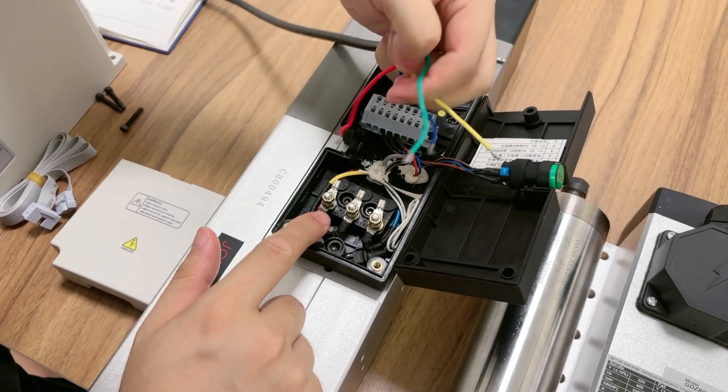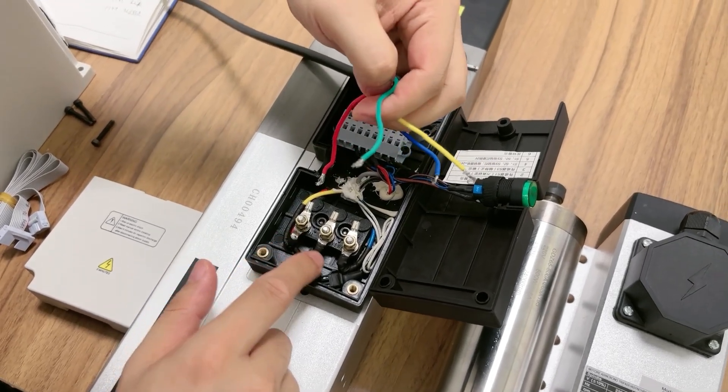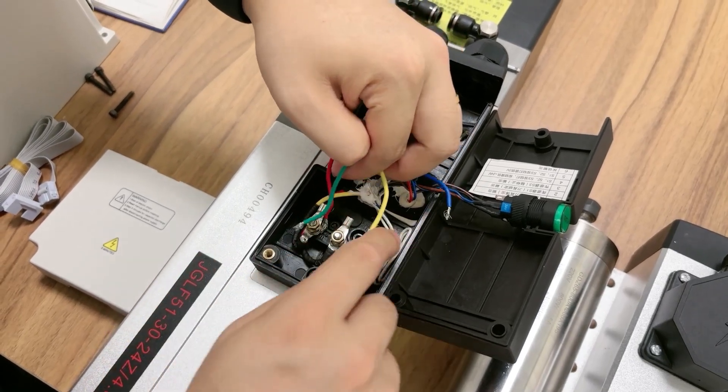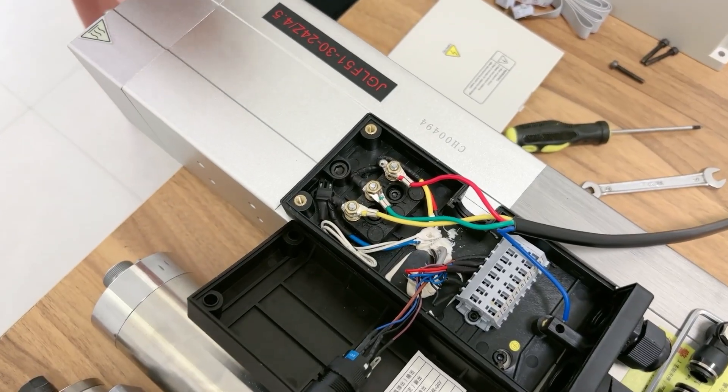As you can see, these wires go to U, V, W. So red, green, yellow. Now we just finished the UVW connection from VFD to spindle. Now I will power on and run it.